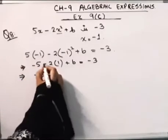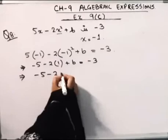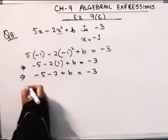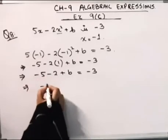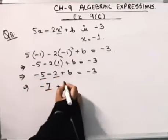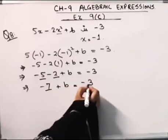This is -5 plus, minus minus 2 plus b, this is equal to -3. This is -7; -5 minus 2 is -7 plus b. This is equal to -3.